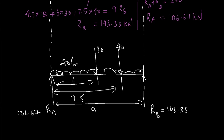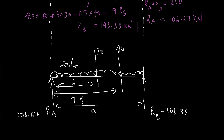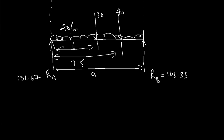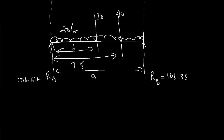Now that we have the reactions at A and B, as discussed in previous problems, we need to take sections at each point where the force changes. Before drawing the bending moment diagram, we need to calculate the shear force diagram by assessing each section. Let's start drawing the shear force diagram.